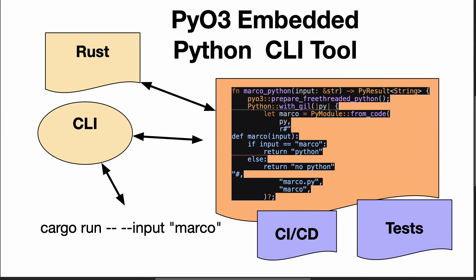Here we have a PyO3 embedded Python CLI tool that uses Rust as the main framework to invoke Python. You can see here that I have an embedded Python function that takes a very simple input — if the string matches 'marco' it returns back 'python', if it doesn't it returns back 'no python'. It's a pretty simple bit of code wrapped up with PyO3.